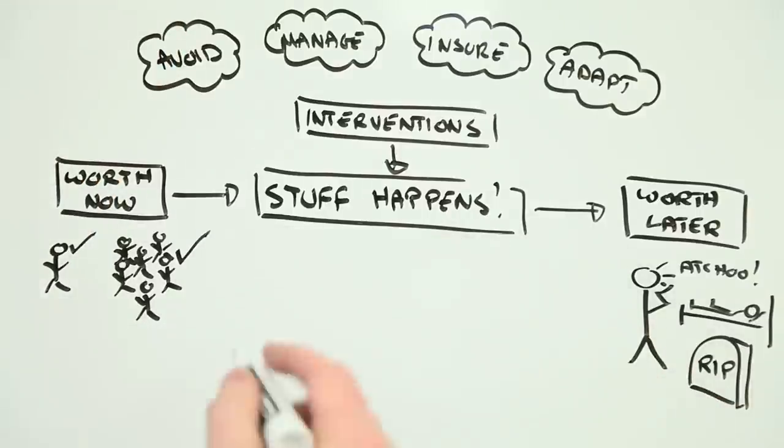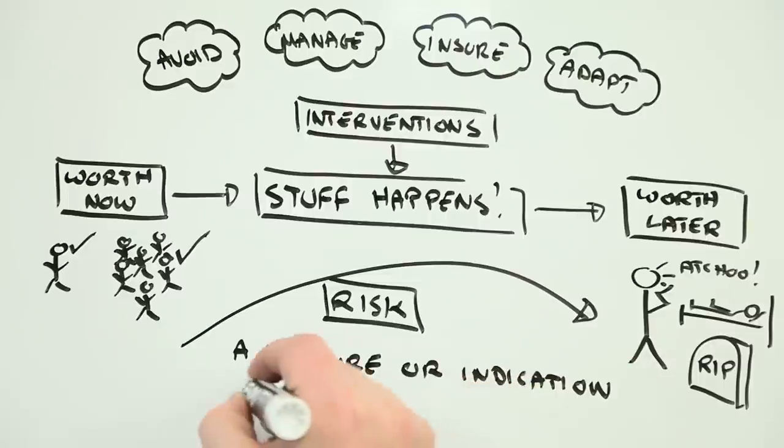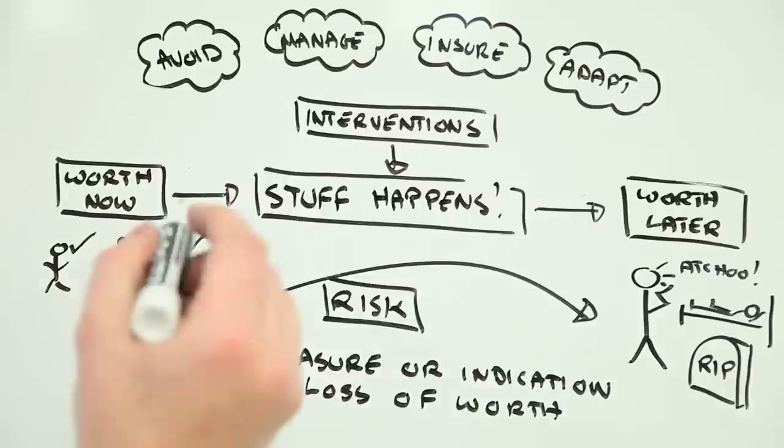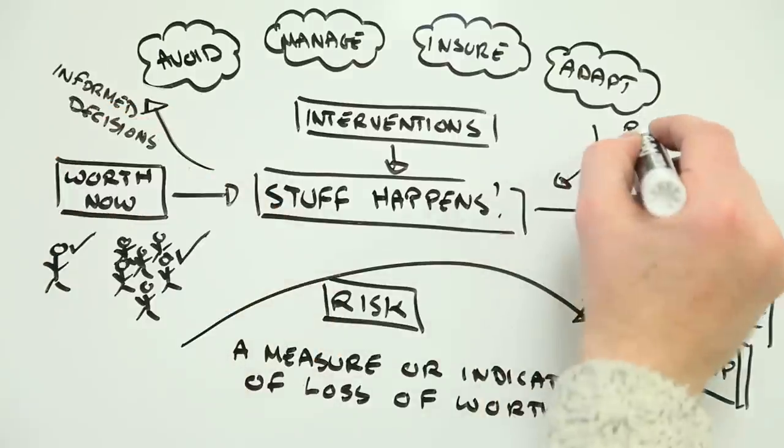To minimize this loss of worth, we need to know what contributes to ill health, how big an effect we're looking at, and how best to intervene. And this is where understanding health risk, that number that indicates the probability of a specific health impact occurring, is so important.